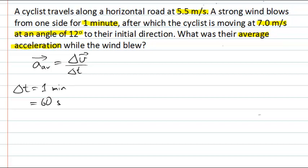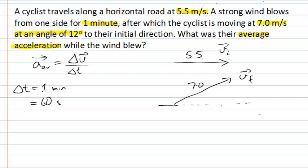A very good starting point for all these physics problems is to draw a diagram. I'm not going to draw a cyclist and a road, but because it's a vector problem, it's incredibly useful to draw the vectors as arrows. So let's start with our initial velocity vector — draw it as an arrow, label it Vi, with a magnitude of 5.5 metres per second. The final velocity has a magnitude of 7 metres per second in a different direction, so we draw that arrow labelled Vf, making an angle of 12 degrees to the initial velocity arrow.